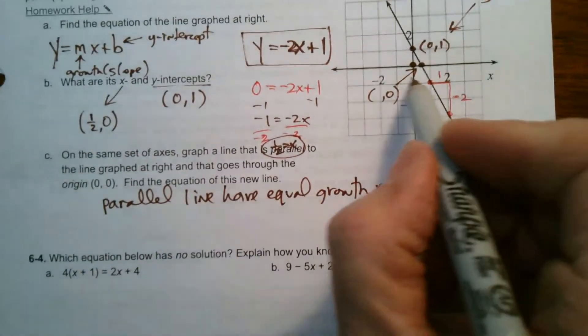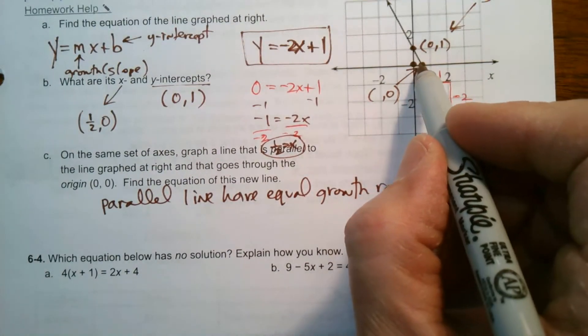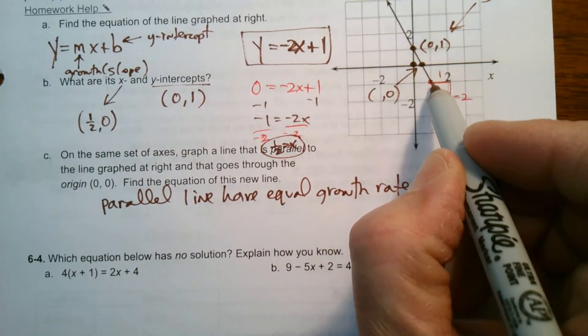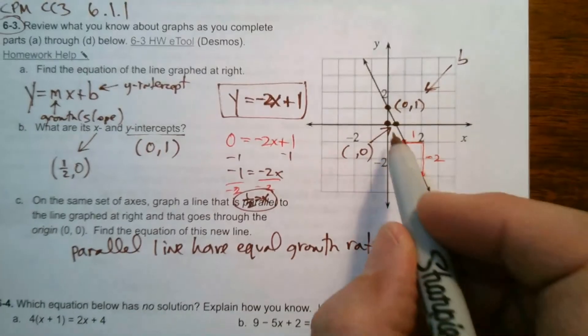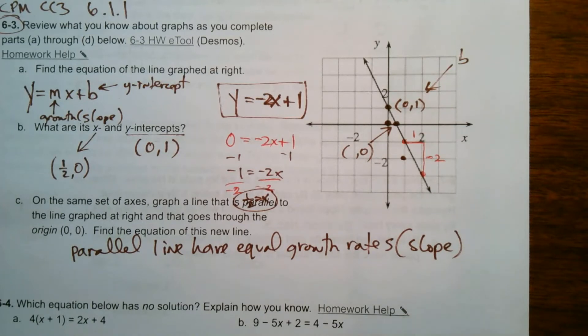So what's true is if it goes through here, I know the same thing's occurring. Every 1 over, it's going to go down 2, right? That was the growth rate with this line. So with my new line as well, and I'll do this in red actually.